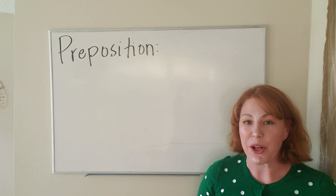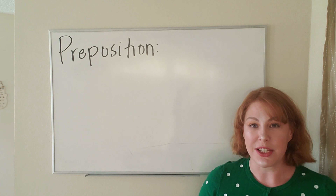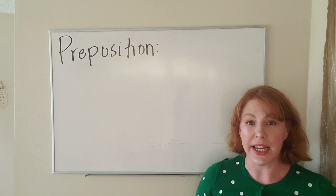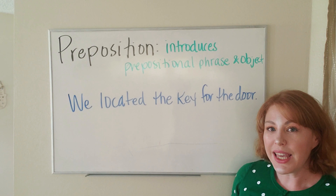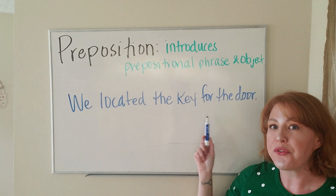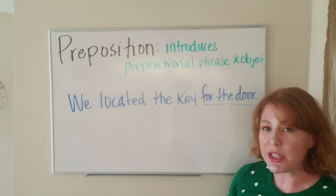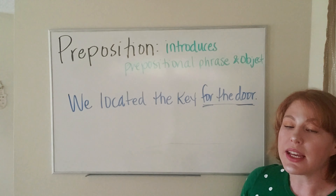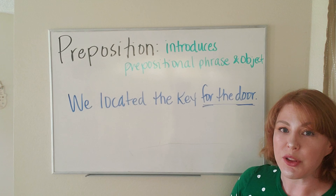The next part of speech is called a preposition. A preposition is a word that introduces a prepositional phrase and an object of the preposition. In our sentence, 'we located the key for the door' — 'for the door' is our prepositional phrase, 'for' is our preposition, and 'door' is our object of the preposition.